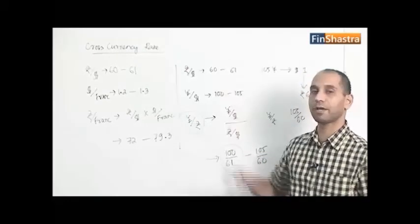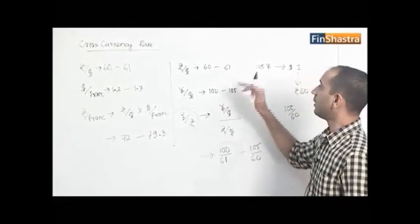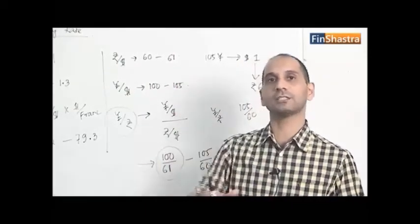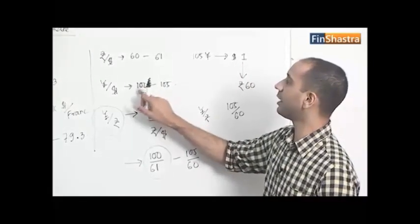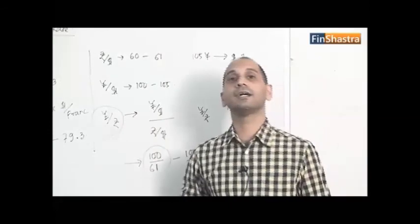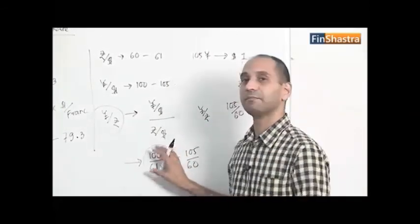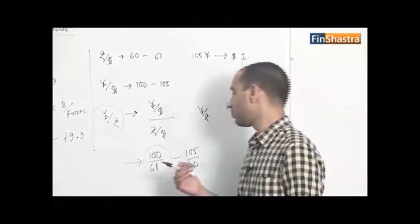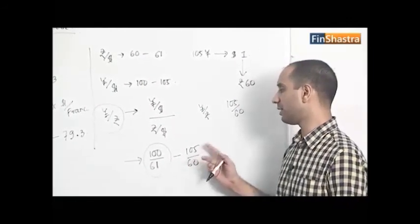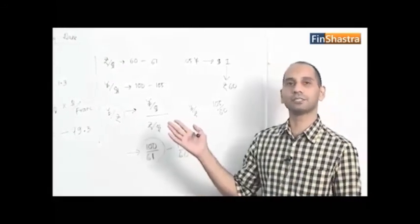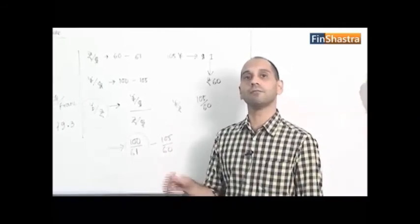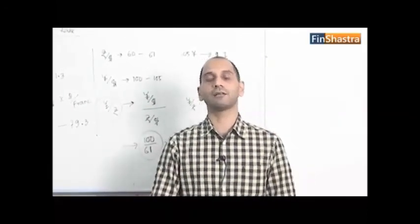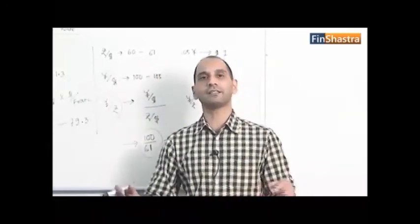When dividing to get the cross currency rate, to minimize the bid rate take the low number and divide by the high number. To maximize the ask rate, take the high number and divide by the low number. In a fraction, high divided by low gives the largest possible value; low divided by high gives the smallest. Always maximize your ask rate and minimize your bid rate when calculating cross currency rates.